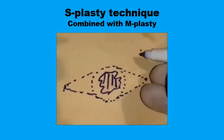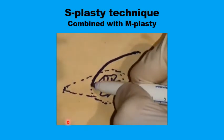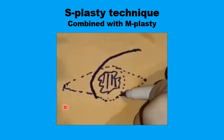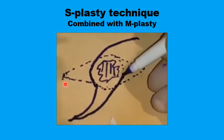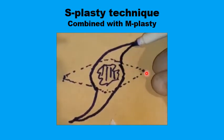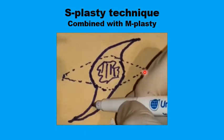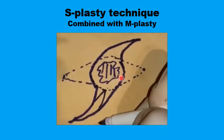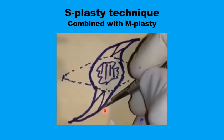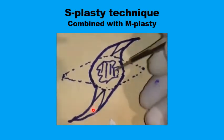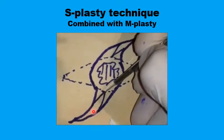This is the S-plasty technique combined with M-plasty. The S-plasty is drawn first within the same distance as a traditional fusiform, but with more length and more acute angles. The M-plasties are then added, sparing some tissue at the ends, with more acute angles and less chance of dog ear formation, as well as less tension in the central part.